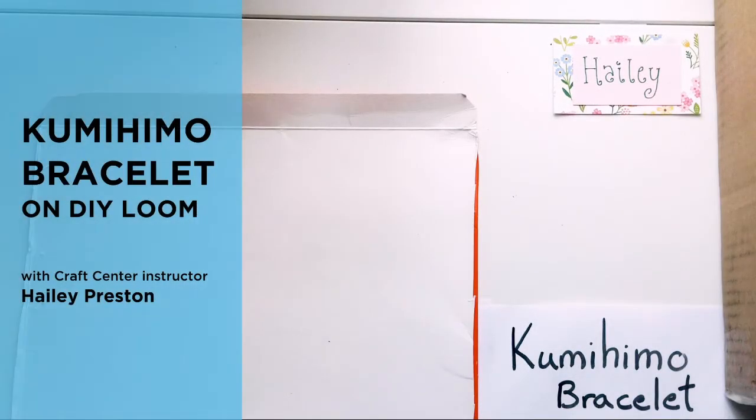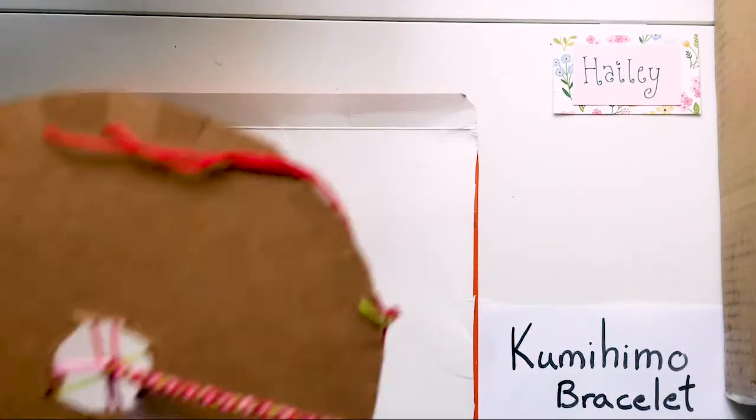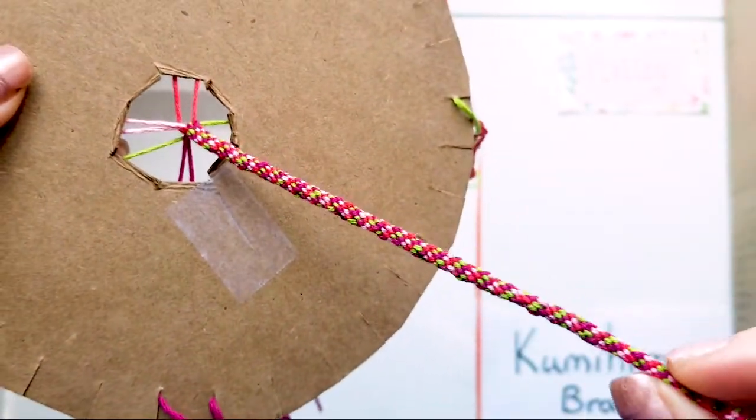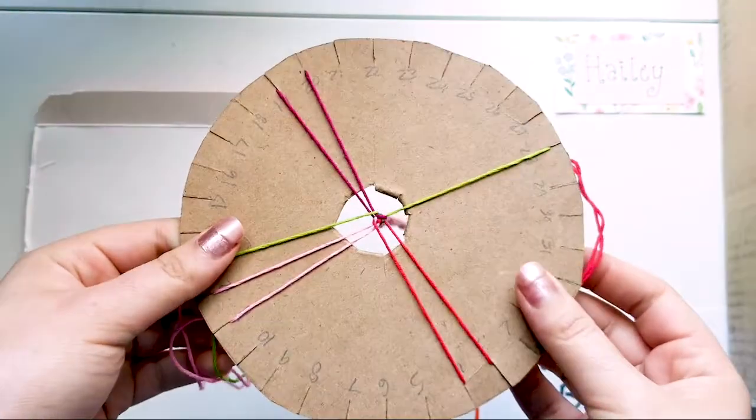Hi, my name is Haley and today we are going to be making a kumihimo bracelet. I'm sorry if I'm pronouncing that wrong, but it's basically a type of friendship bracelet. It ends up being round and kind of spiraled and you make it on one of these circular wheels.